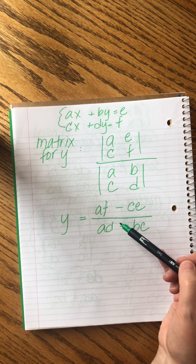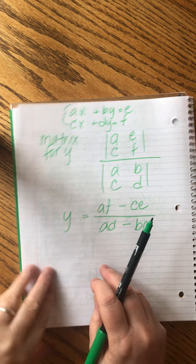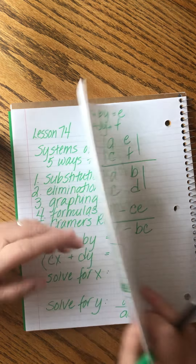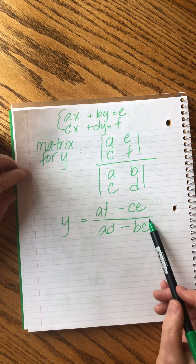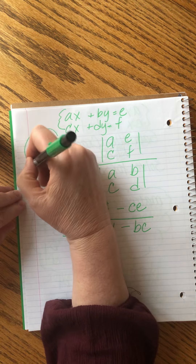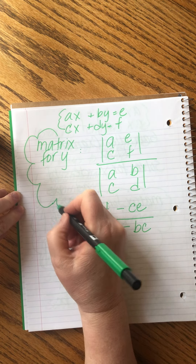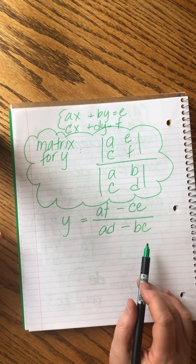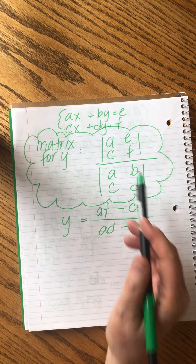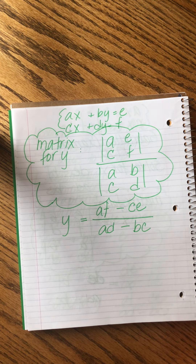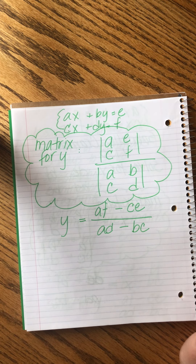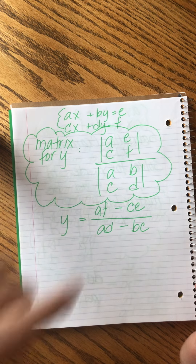With two-by-two matrices, we're creating fractions. Solving the Y matrix gives A·F minus C·E over A·D minus B·C. Comparing that to our formula: when we solve for Y we get AF − CE over AD − BC. They match perfectly. So if we memorize and use this matrix, we don't even have to try to remember the formulas — the matrix gives us the formula automatically.